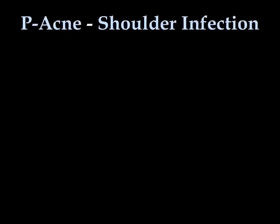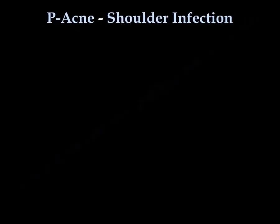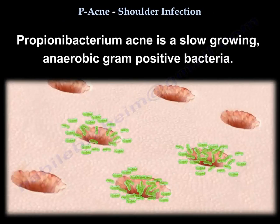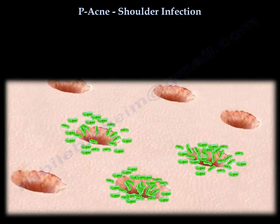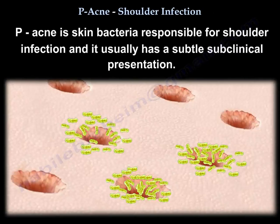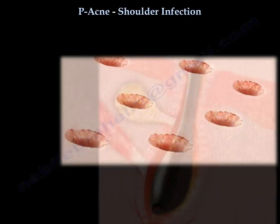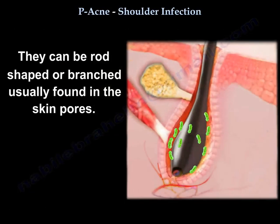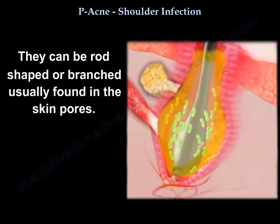P. acnes is a slow-growing anaerobic gram-positive bacteria. It is a skin bacteria responsible for shoulder infection and usually has a subtle subclinical presentation. P. acnes can be rod-shaped or branched and is usually found in the skin pores.